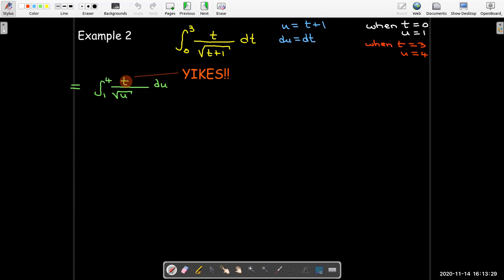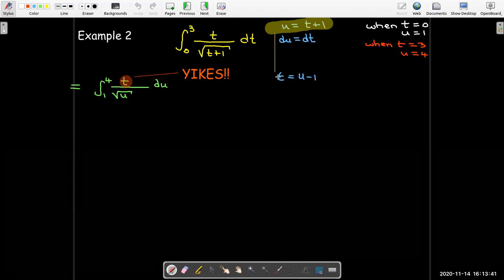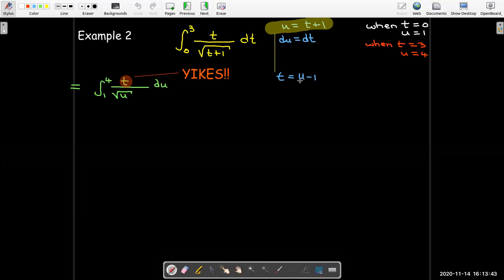But, all right, the moment of panic is going to pass. Because if we look over here with our u substitution, u equals t plus 1. Well, I can actually solve that and write it as t equals u minus 1. So I can replace this t with the expression u minus 1. And now I can proceed.